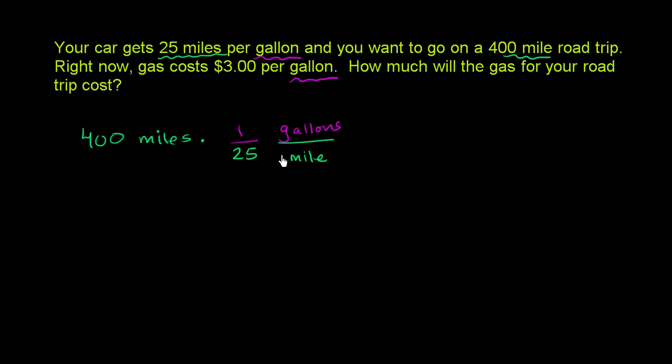Now what do we get when we multiply these two things? The whole purpose was to figure out how many gallons we're going to use. We see that our miles cancel out. And then I have 400 times 1 over 25 gallons, which is the same thing as 400 divided by 25 gallons. So this is equal to 400 over 25 gallons, which is equal to 16 gallons.